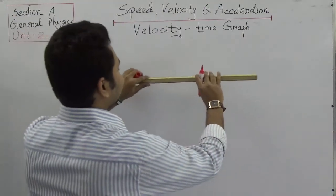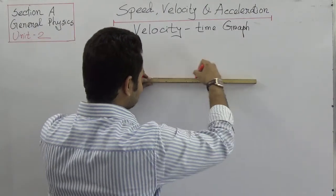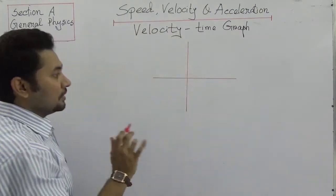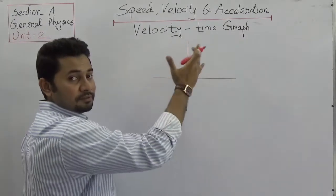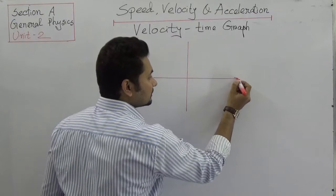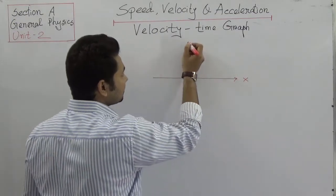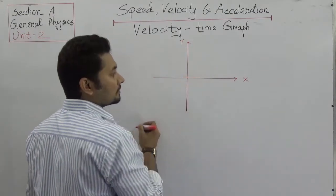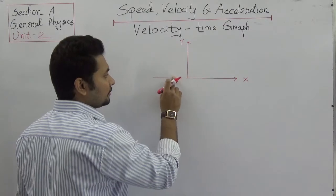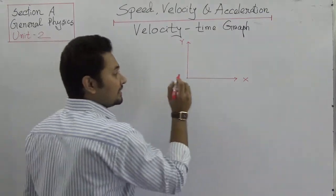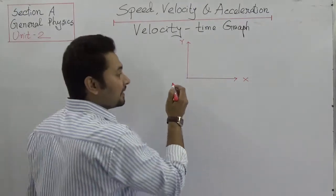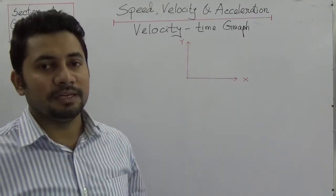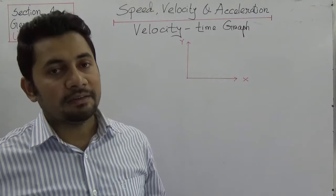In understanding a graph, we need to know that we explain things by presenting them on the x-axis and the y-axis. In the first quadrant, both values will be positive — both x-axis and y-axis are positive here. In a velocity-time graph, we usually put time on the x-axis.